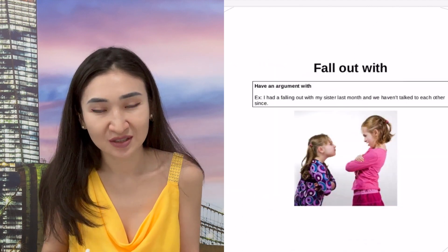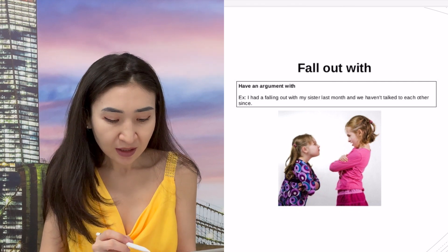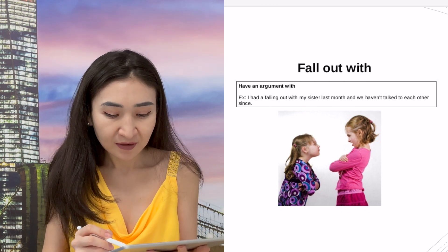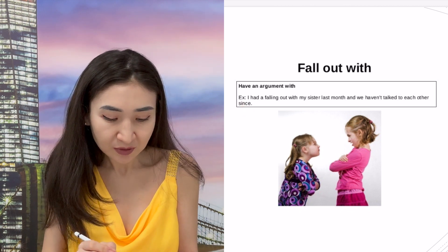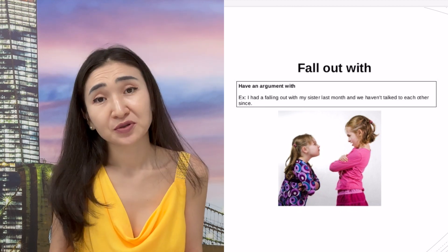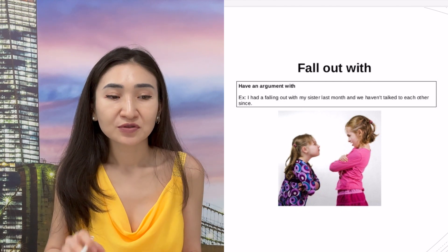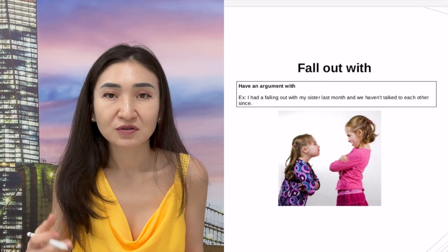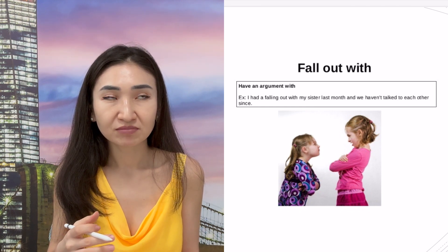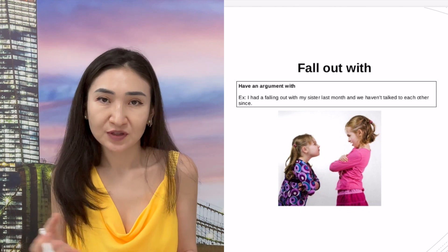We go further to another phrase: 'fall out with,' which means to have an argument with someone. Example: 'I had a falling out with my sister months ago and we haven't talked to each other since.' You can see this in the picture of two little girls having a small argument. Instead of saying 'have an argument with someone,' it's better to say 'fall out with someone' — it shows the examiner you know synonyms and varied phrases.